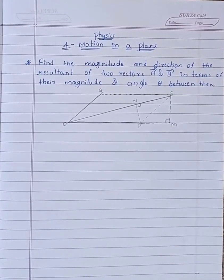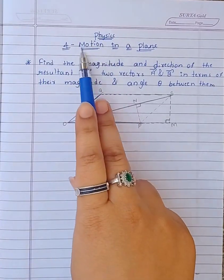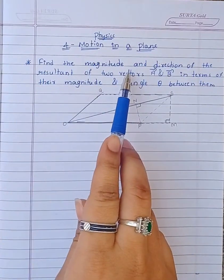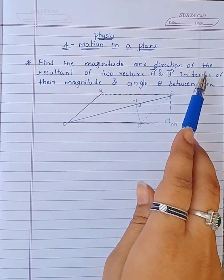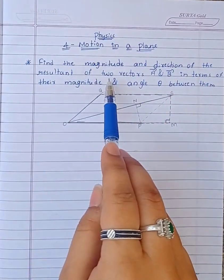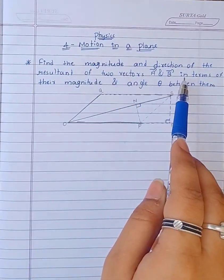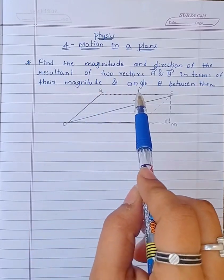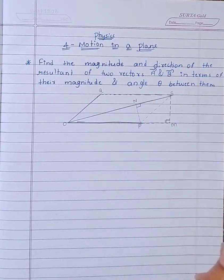Today we are going to see an important question from Chapter 4, Motion in a Plane: Find the magnitude and direction of the resultant of two vectors A and B in terms of their magnitudes and the angle theta between them.